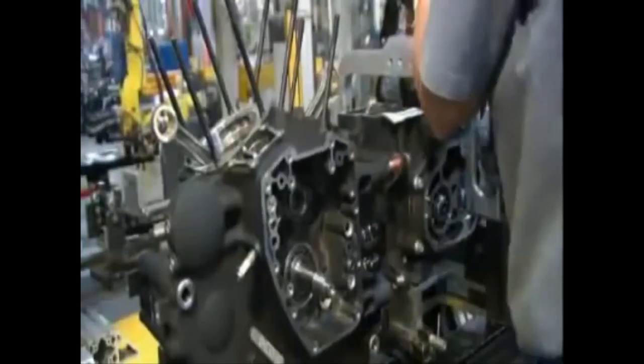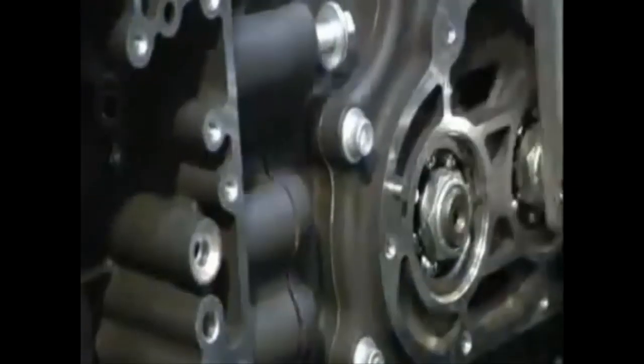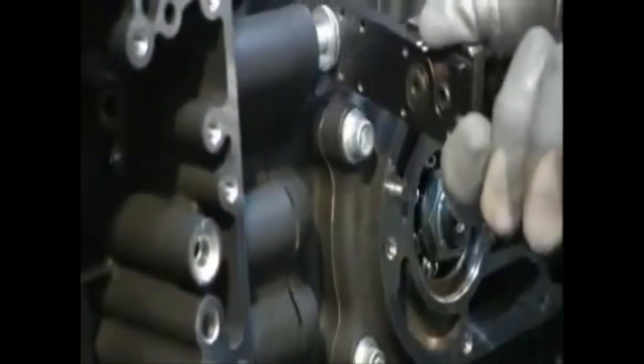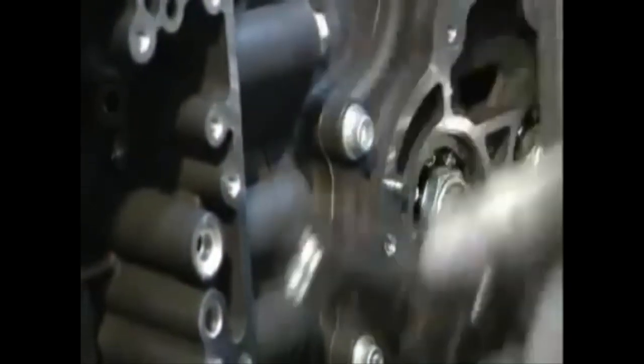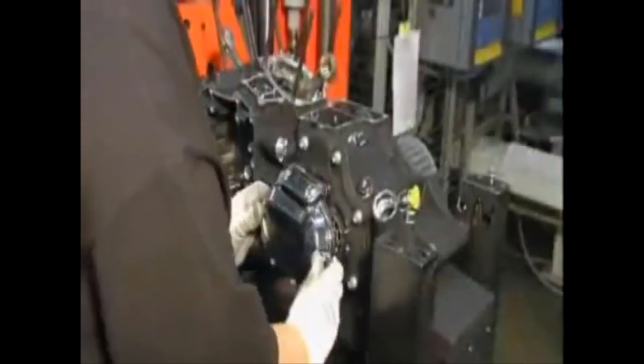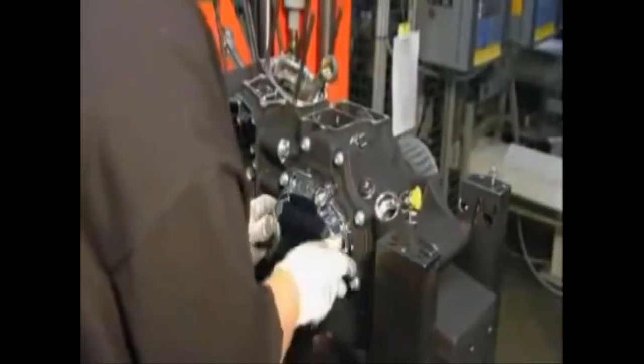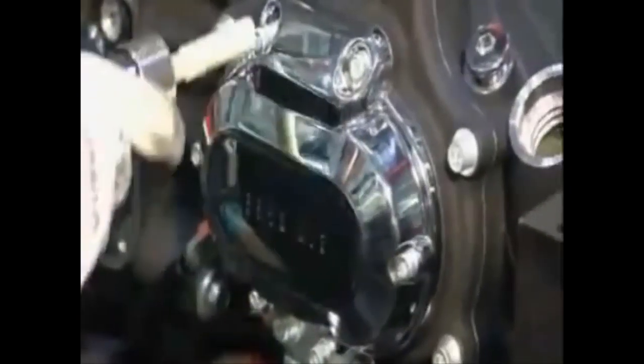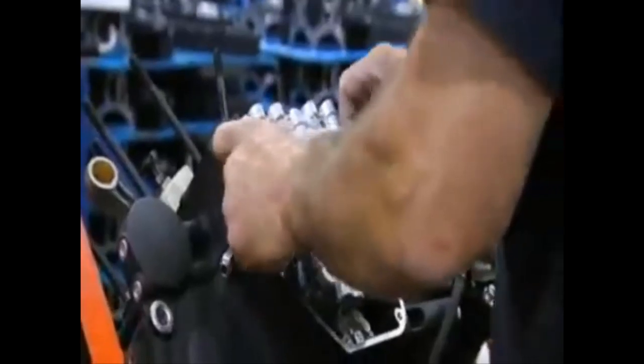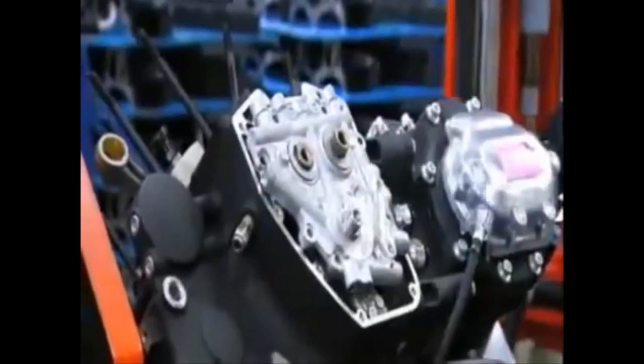It's now time to link the crankcase and shaft assembly to the transmission. This chrome-plated cover is the finishing touch. Next, they fit the camshaft into the crankcase. Its job is to maintain valve timing.